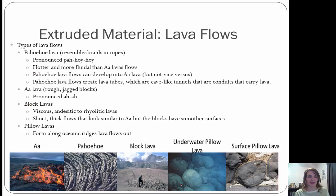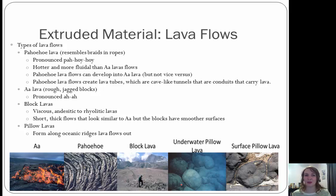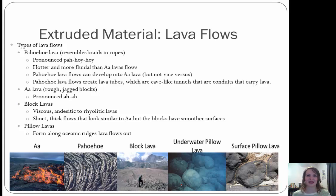Extruded material — these would be what we consider our extrusive types of rocks. Different types of lava flows: the first is pahoehoe lava, which resembles braids and ropes. It's hotter and more fluidal than what we call aa lavas. Pahoehoe lava flows can develop into aa lava, but not the other way around. They can also create lava tubes, which are cave-like tunnels that act as conduits carrying lava.